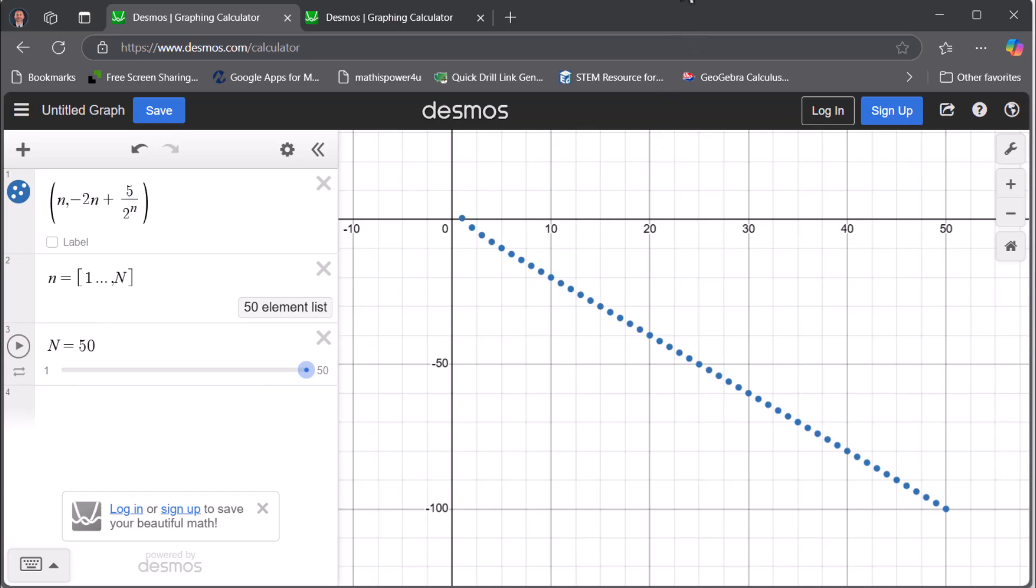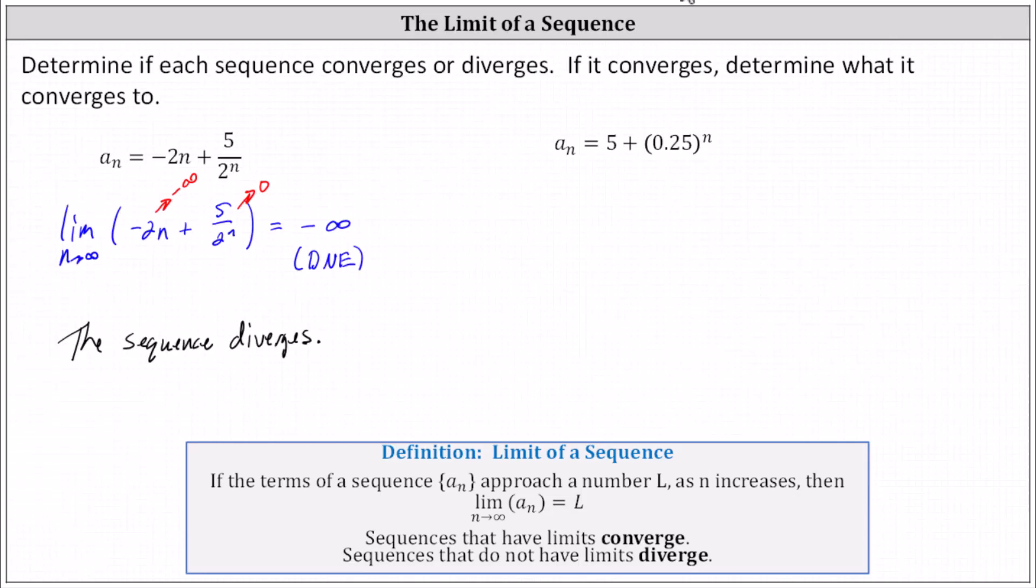Let's look at the second example. We have a_n equals 5 plus 0.25 to the power of n. Once again, we consider the limit as n approaches infinity of a_n. Notice 5 is not affected by n. We only have to consider what's happening to 0.25 to the power of n. Because the base is between zero and one, as you multiply by more and more factors of 0.25,